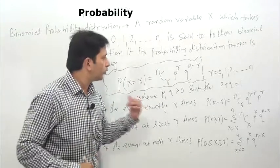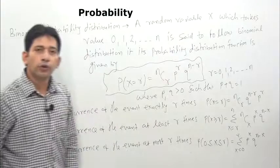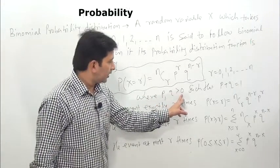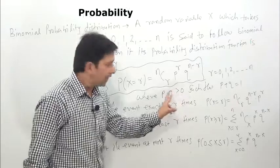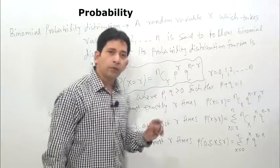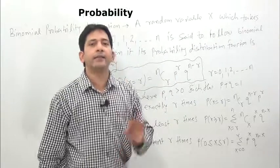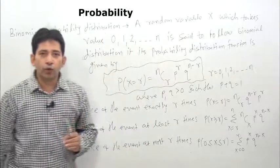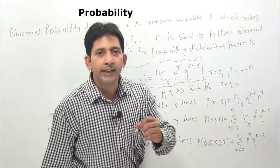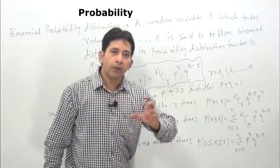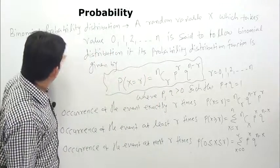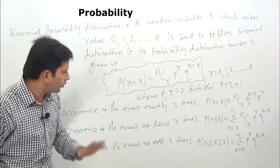Questions are going to be about how to use this. Here r = 0, 1, 2, 3, up to n, where p and q are both greater than 0. p is the probability of an event happening in a single trial; q is the probability of the event not happening in a single trial. When the number of events increases and the events are independent — say 4 dice throws or 8 dice throws — we use Binomial Distribution.